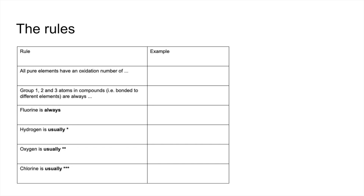We'll start with the rules. I'm going to run through this table and then we'll look at some examples on the following slides. Rule number one: all pure elements have an oxidation number of zero, because they're not bonding to anything different. Three examples: Na, oxygen in O₂, and Ne.